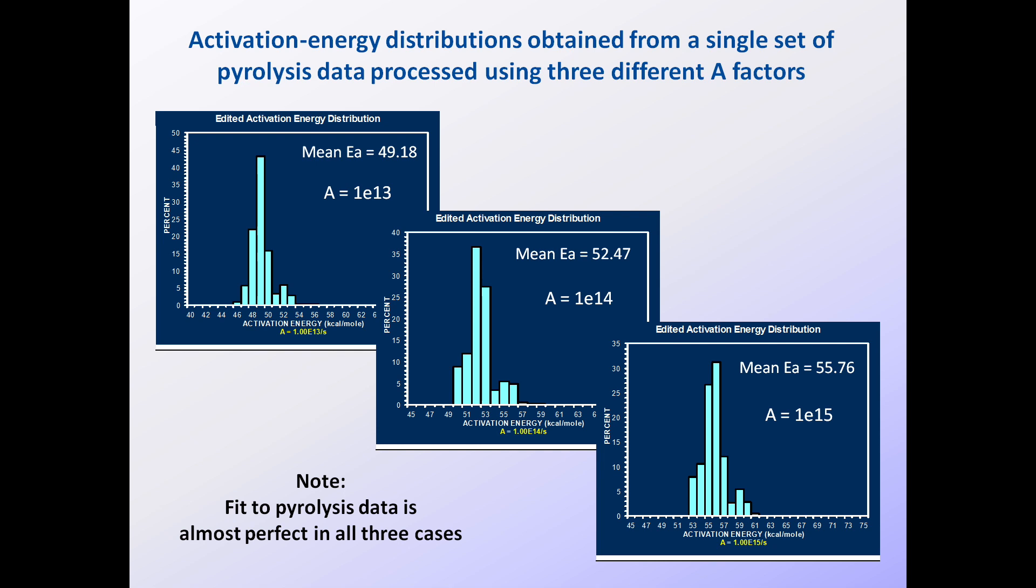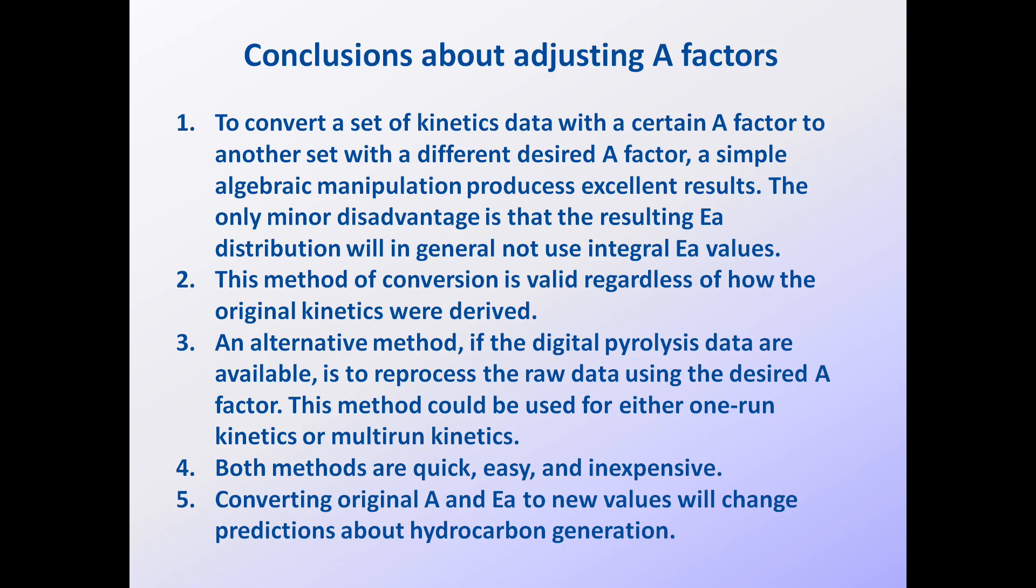In summary, I've presented two methods to convert the A factors and activation energy distributions for source rock kinetics. One method requires only the existing A factor and activation energy distribution and involves some simple algebra. This method can be used for any data set. The second method requires access to the original digital pyrolysis data and special software that will extract kinetics from the pyrolysis data using any desired A factor.